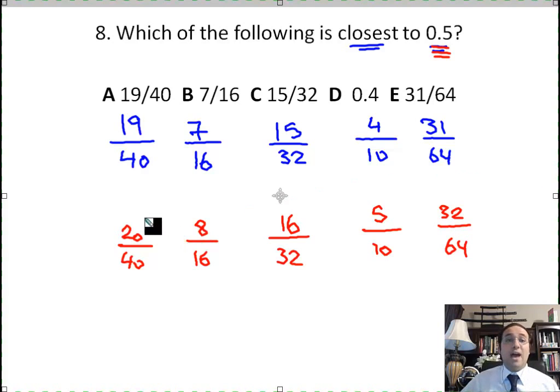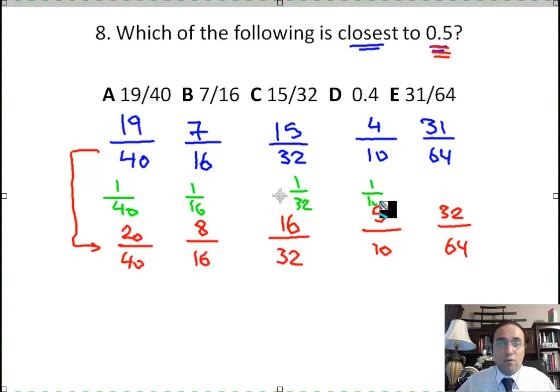Where is the pattern? Where is the secret? The secret is I'm asking you about the difference between each of these numbers and half, because I want to know which is the closest. Now, what's the difference between this and this? What's the difference between answer A and half, which is 20 over 40? The difference is 1 over 40. In B, what's the difference between 7 over 16 and 8 over 16? It's 1 over 16. How about C? It's 1 over 32. The difference in D? 1 over 10. Right? 4 over 10 and 5 over 10, the difference is 1 over 10. 31 over 64 and 32 over 64, the difference is 1 over 64. Ah, there you are. So what is the trick? The trick is the difference between each of these fractions in the question and the number half, 0.5, is 1 over that denominator.